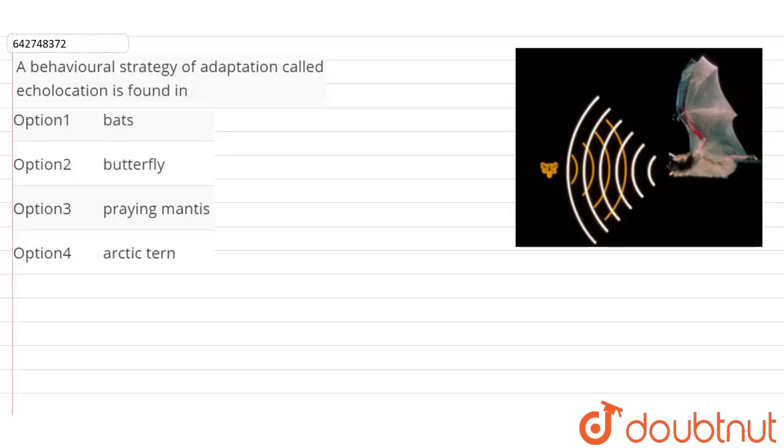Select the animal from the given options which has a behavioral strategy of adaptation called echolocation. Now, adaptation is any modification that an animal or a plant will show in order to survive in its habitat.